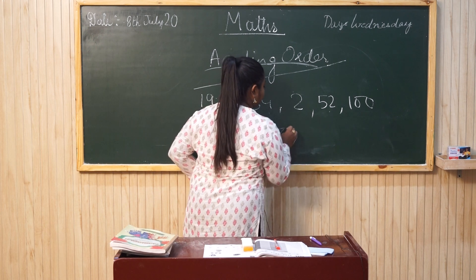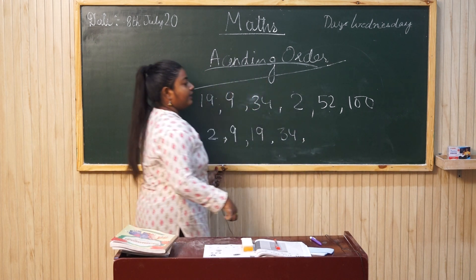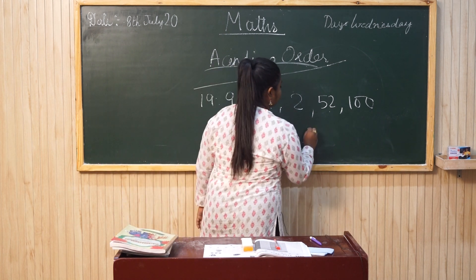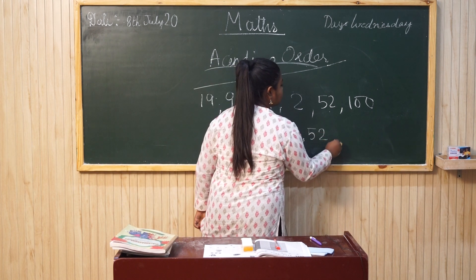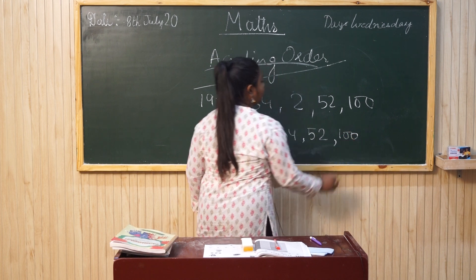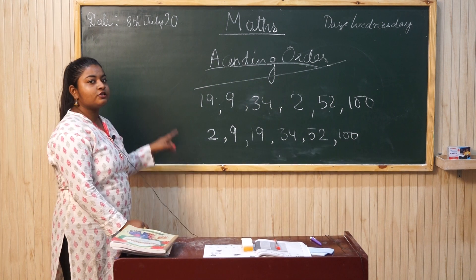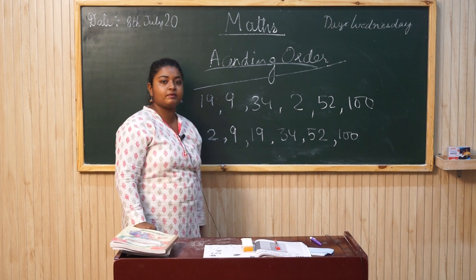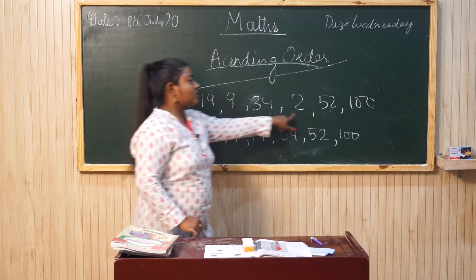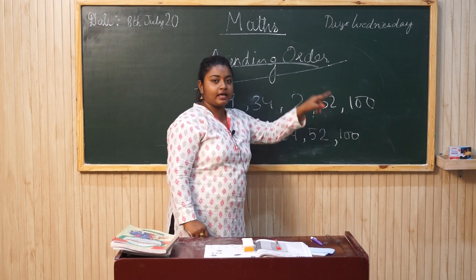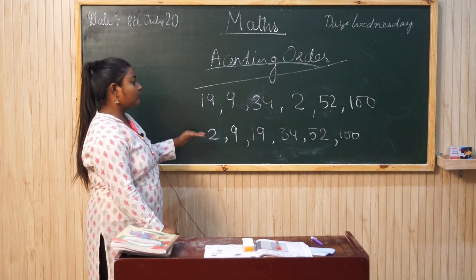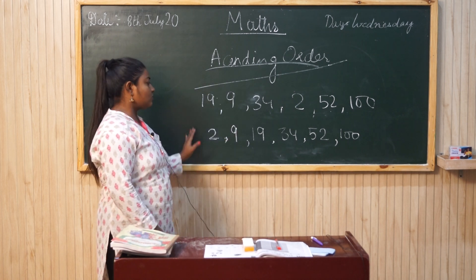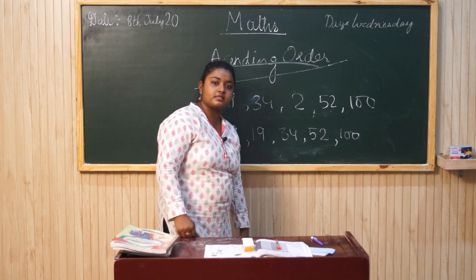So you will write 34, then next is 52. It will come here. And last is 100. So we have done it in a channelized way. This is a proper series written. The numbers were jumbled, but this has been given in ascending way. This concept we call ascending order.